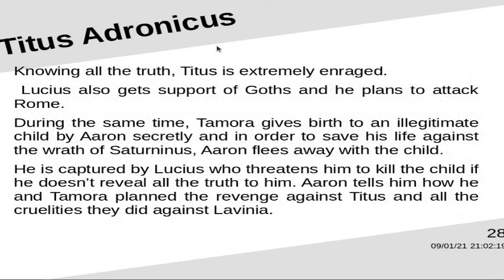After knowing all the truth, Titus is extremely enraged. Lucius also gets the support of the Goths and plans to attack Rome. During the same time, Tamora gives birth to an illegitimate child by Aaron secretly. In order to save the child's life from the wrath of Saturninus, Aaron flees away with the child. He is captured by Lucius, who threatens to kill the child if Aaron doesn't reveal the truth. Aaron tells him how he and Tamora planned the revenge against Titus and all the cruelties they did against Lavinia.